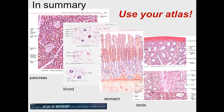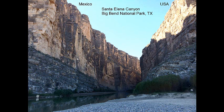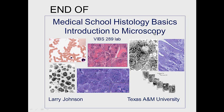In summary, use your atlas to identify the labeled structures. The key question: which type of microscopy or staining is best for observing cellular detail? Toluidine blue shows more cytoplasmic detail than H&E, but transmission electron microscopy has by far the highest resolution and reveals the most cellular detail. This concludes medical school histology basics: introduction to microscopy. Please consider subscribing to VIBS Histology.